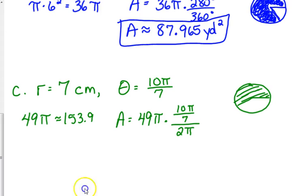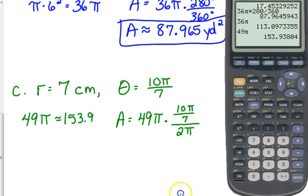Now you are going to need to use your parentheses here. So 49 pi, you don't need to put parentheses around that. Times, you do need to put parentheses around the 10 pi over 7. Just put one set of parentheses around the 10 pi over 7, that's sufficient, divided by 2 pi.